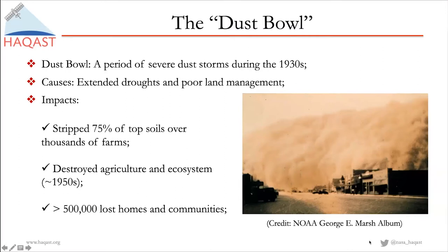When this country was formed, the government encouraged everybody to go west. At the same time, very powerful machinery was invented, so people were able to completely destroy very deep grassland and convert it into cropland. The first few years were actually a very happy time because there was abundant rainfall. There's a very famous saying that the rain just follows the plow.